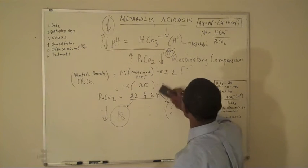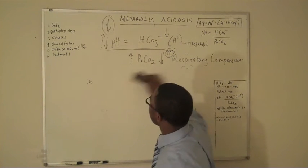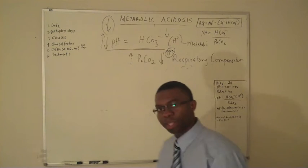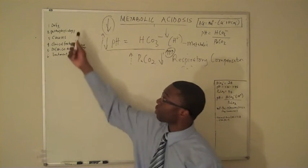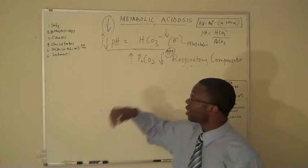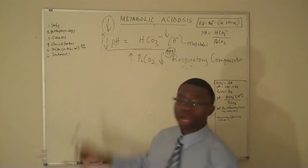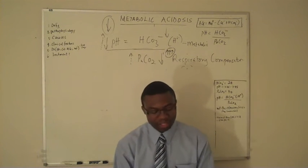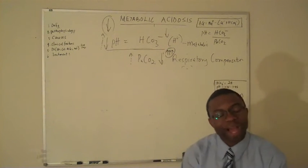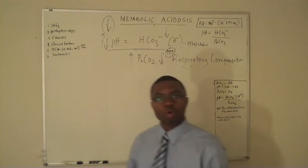To kind of wrap up this lecture, we talked about definition. It's all about the bicarb when it comes to metabolic acidosis. And we talked about pathophysiology. What causes it? Clinical features, diagnosis, how do we treat? You treat the cause. Remember, there's so many things that can cause metabolic acidosis. It's just not one thing. So you want to find it, fix it, leave it alone.